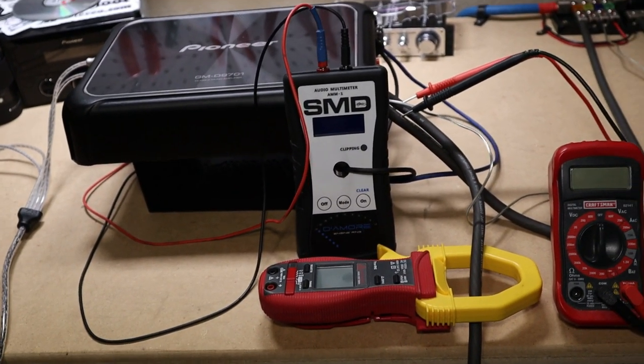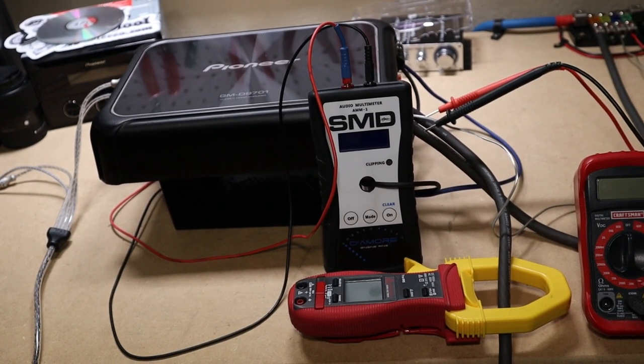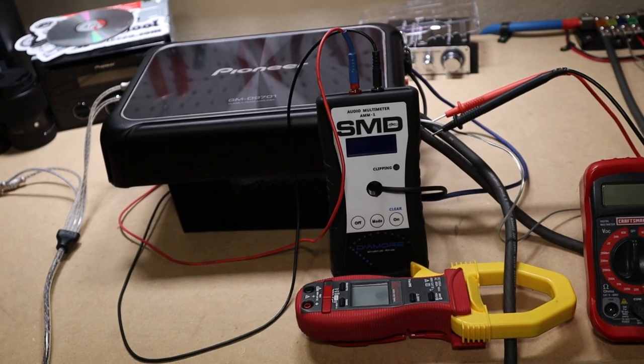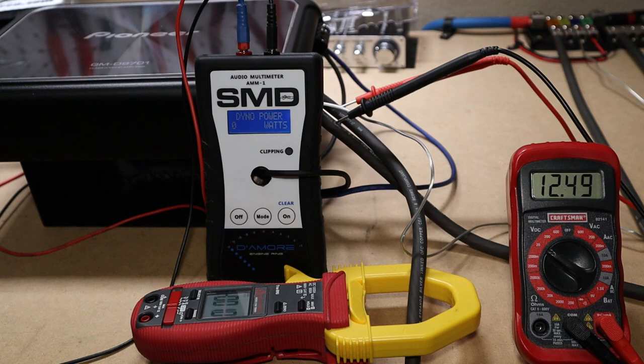And we'll start with the dyno exactly like we did with the CCA. We'll see what power we get there and then we'll do the one minute test and see if we have much difference at all, a big difference, whatever it may be. We will see. One thing I want to mention that I did not mention before is on the head unit, I'm turning the volume up to 49.